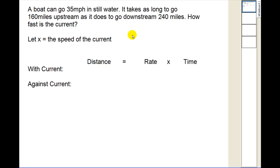Here's a problem that came up on the Math091 midterm review. A boat can go 35 miles per hour in still water. It takes as long to go 160 miles upstream as it does to go downstream 240 miles. The question is, how fast is the current?